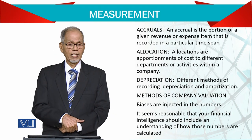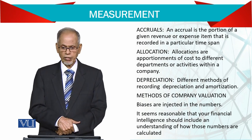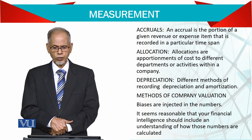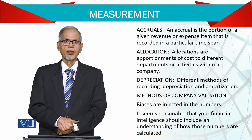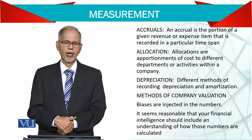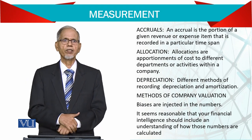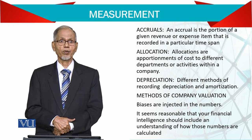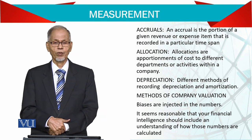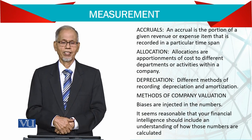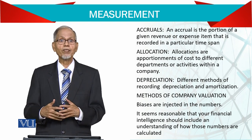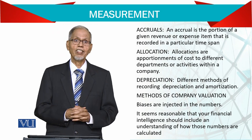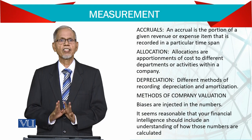Accrual is the portion of a given resource or expense item recorded in a particular time span. Allocations are the apportionment of cost to different departments or activities within the company. For example, in a university running many courses, we need to determine how much each course costs — not only the direct cost but also indirect costs should be allocated on a reasonable basis.